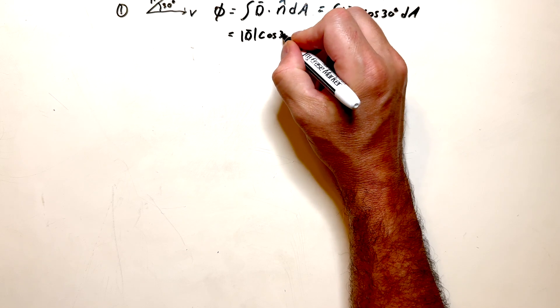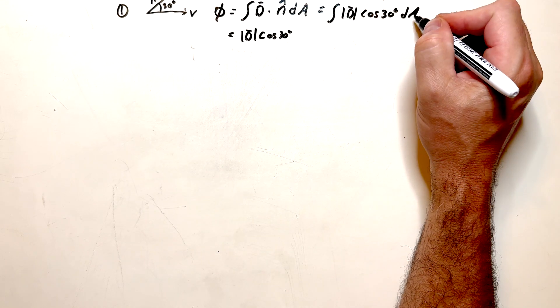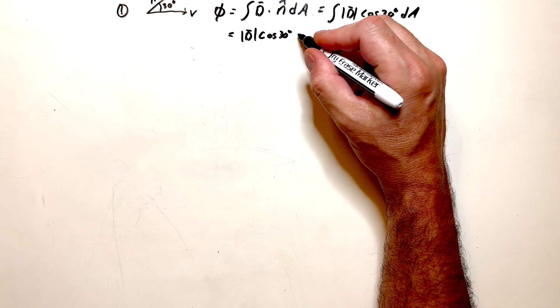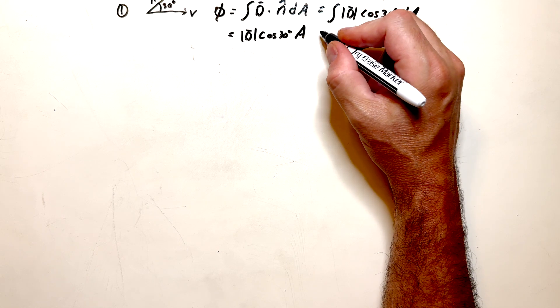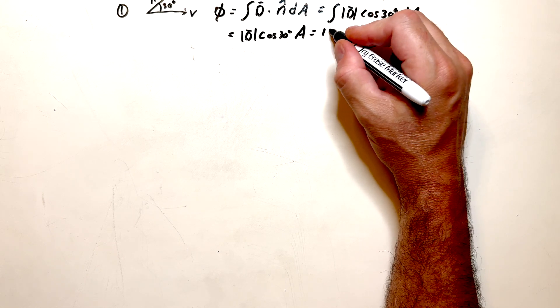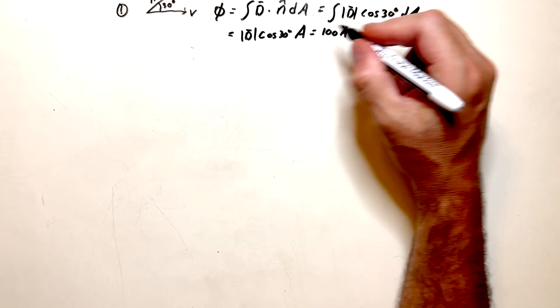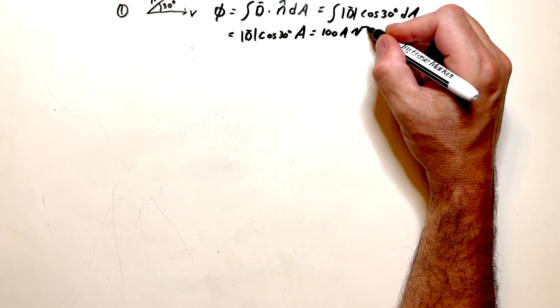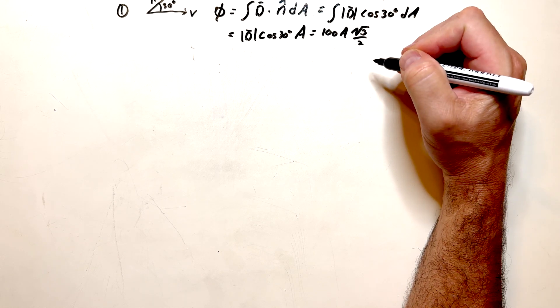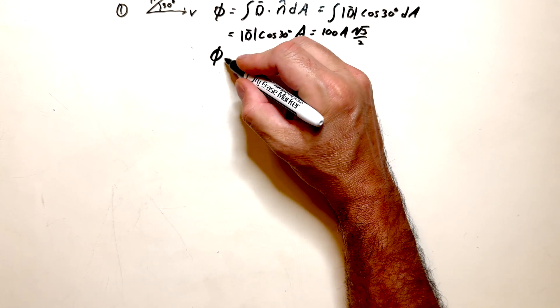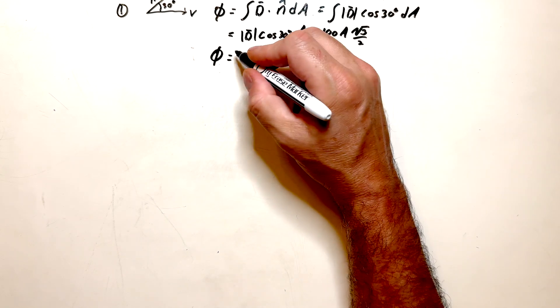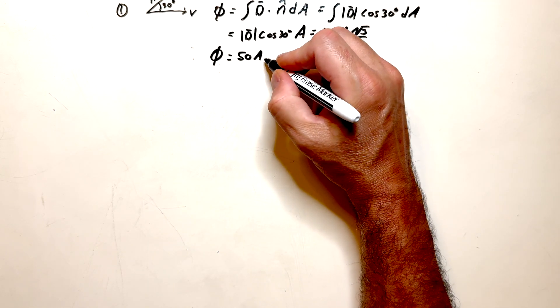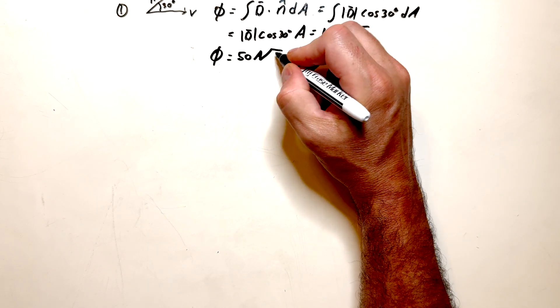And of course, all we're left with is integrate dA, we just get the area A. So that will be equal to 100A, because that's the magnitude of D, times the square root of 3 over 2. So phi is equal to 50A, or 50 square root of 3A.